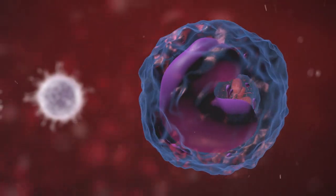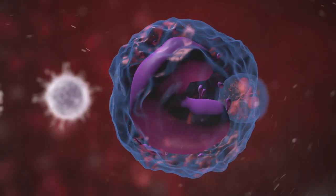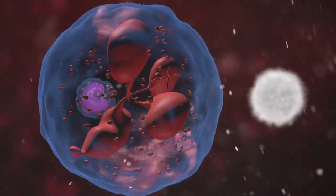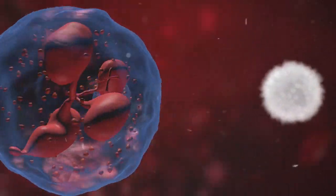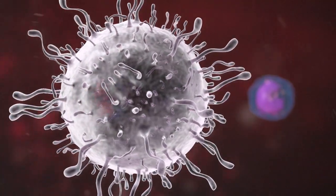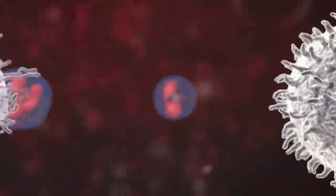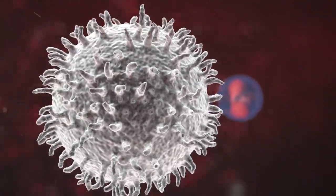Basophils sound the alarm when an invader appears. Eosinophils attack and kill parasites. Neutrophils flock to sites of acute inflammation. Lymphocytes. B cells create antibodies to tackle specific threats, while T cells destroy infected cells.